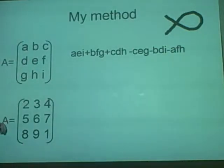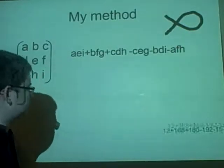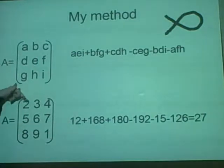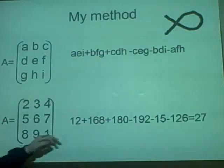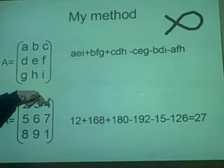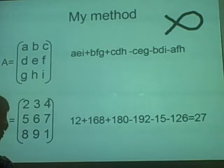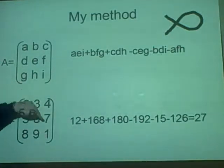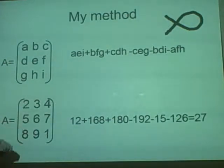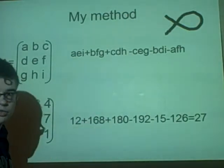I've got a little example of how it works. We want the determinant of this, so we have 2 times 6 times 1, which is 12, then we have 3 times 7 times 8 is 168, then 4 times 5 times 9 is 180. Then we subtract 4, 6, 8, subtract 3, 5, 1, subtract 2, 7, 9, and you'll end up with the answer of 27.